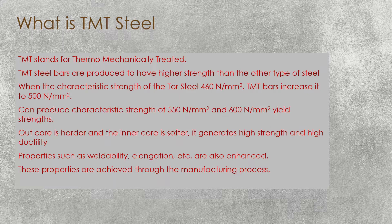We can produce characteristic strengths of 550 N/mm², 600 N/mm², or even higher. The outer core is hard while the inner core is softer. This generates high strength and high ductility in the TMT steel. This property is key, and properties such as weldability and elongation are enhanced in TMT steel through the manufacturing process.